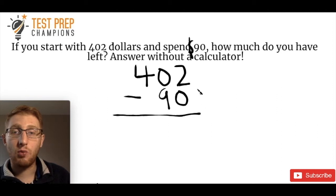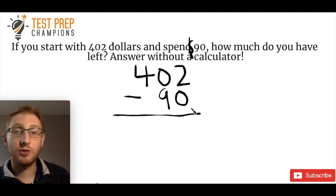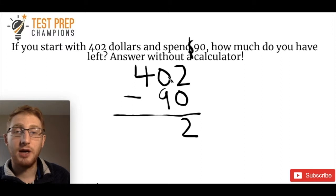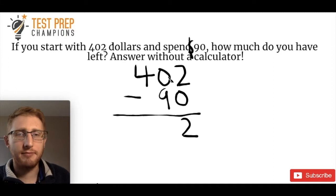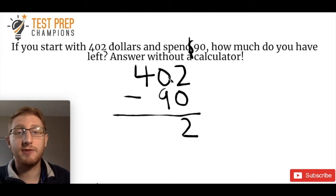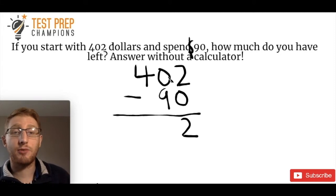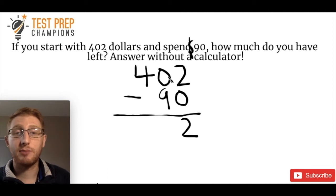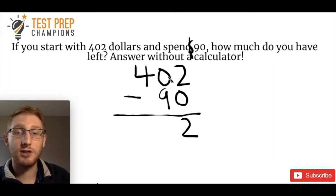So we do 2 minus 0 — if you start with 2 and don't take any away, you're just left with 2. Now this part is where it might get a little tricky. If we do 0 minus 9, you can't take away 9 from 0. That would give us a negative number — negative 9 — but that's not the right answer here. You can't take away $9 from nothing, and doing so gives a negative number, which is not the correct approach.